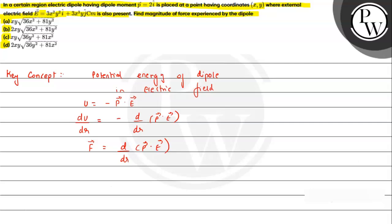Now this expression finally we have to use for the given question. From the given expression we can see that dipole moment is along x-axis and electric field has i and j components. So what we can write is F bar can be written as p times the differentiation with respect to x of the electric field.